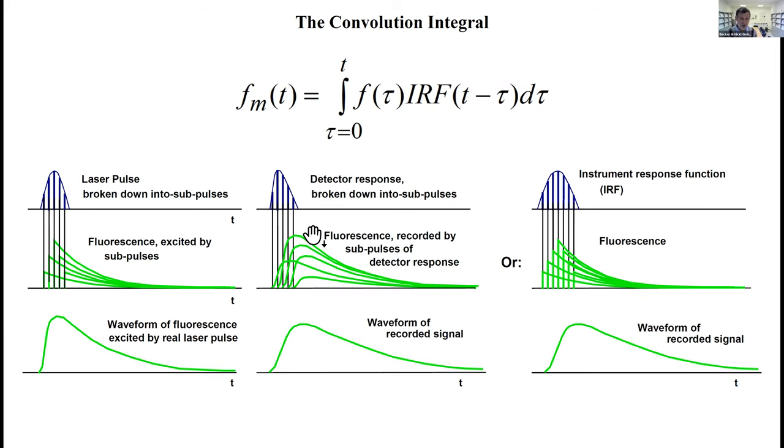We measure this with a detector of finite speed. Again, we break down the detector response into a number of smaller pulses. Then every one of the sub-pulses of the detector response will see one of these waveforms. The sum of these waveforms is the waveform we record with our FLIM system. We combine this into a common laser instrument response function called IRF. So this is convolution and this is the IRF.